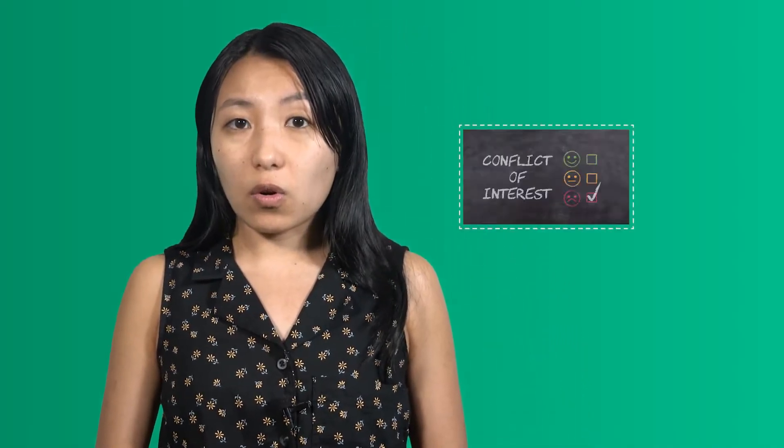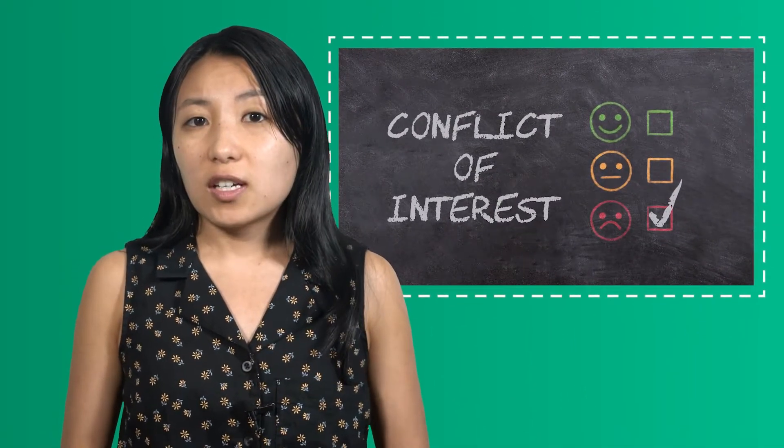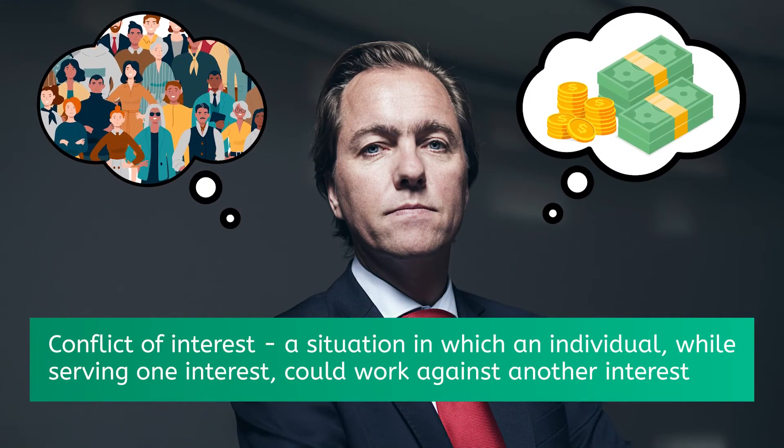When elected officials have a duty to act on behalf of those who put them in office, receiving money or other forms of compensation can be a conflict of interest. A conflict of interest is a situation in which an individual, while serving one interest — receiving gifts from lobbyists, for example — could work against another interest, such as representing the citizens who elect you to office. Lobbyists generally focus their efforts on the legislative branch where laws are created, but may also try to influence the judicial branch to advance their causes.